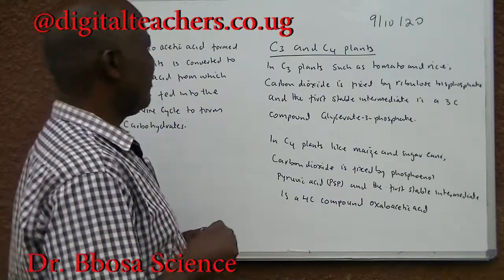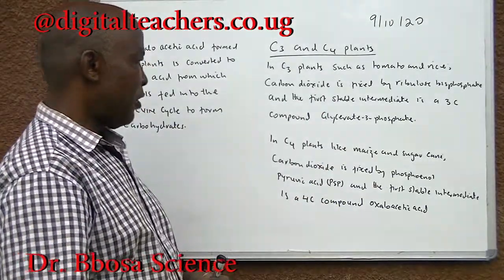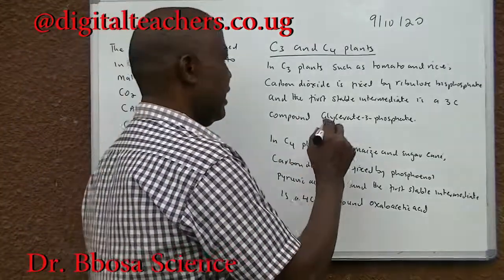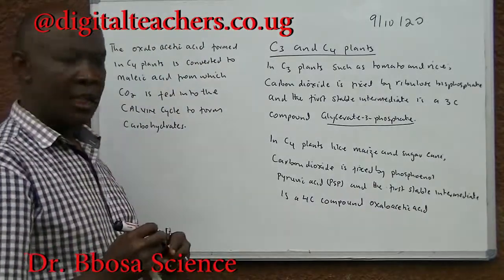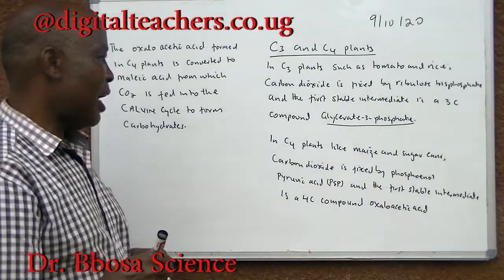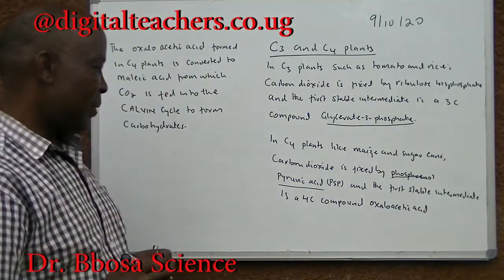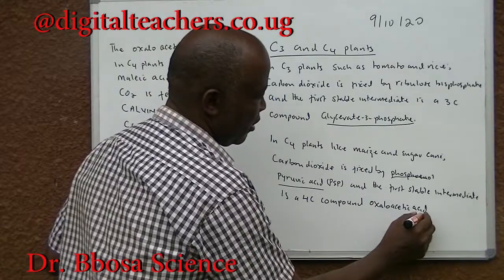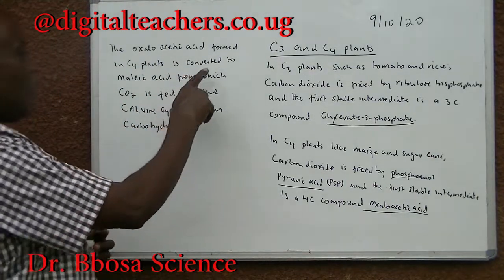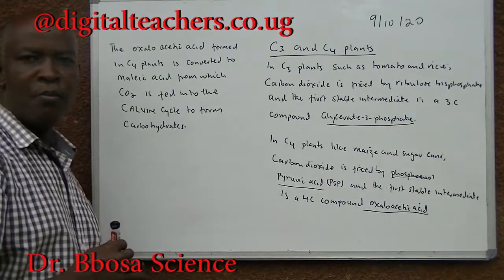C3 and C4 plants: in C3 plants such as tomato and rice, carbon dioxide is fixed by ribulose bisphosphate, and the first stable intermediate is a 3-carbon compound, glycerate-3-phosphate. In C4 plants like maize and sugarcane, carbon dioxide is fixed by phosphoenolpyruvic acid (PEP), and the first stable intermediate is a 4-carbon compound, oxaloacetic acid. The oxaloacetic acid formed in C4 plants is converted into malic acid, from which carbon dioxide is fed into the Calvin cycle to form carbohydrates.